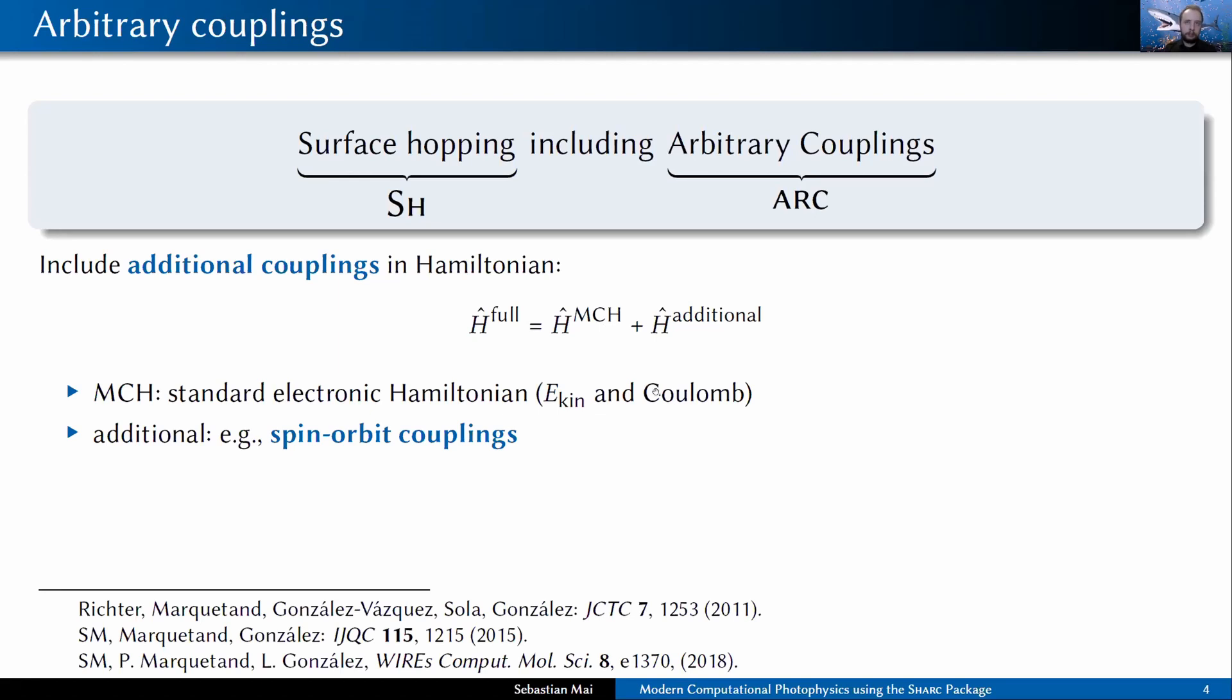Here, in SHARC, we generally describe this as a sum of the standard electronic Hamiltonian that is used in almost every electronic structure program, including kinetic energy and Coulomb interactions, and then you have an additional term that, for example, includes spin orbit couplings that you need for intersystem crossing.